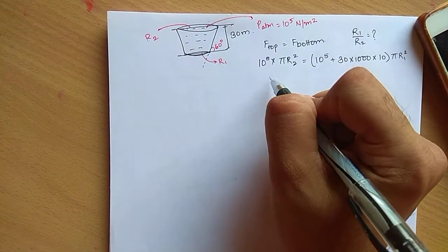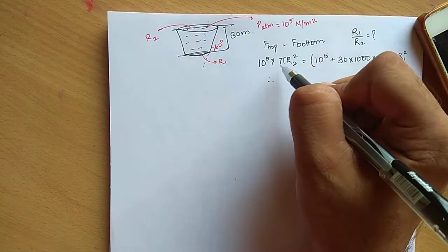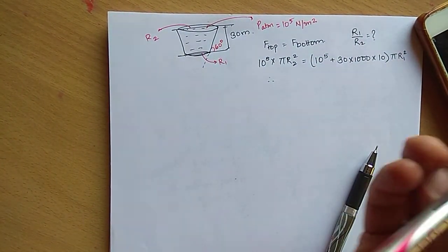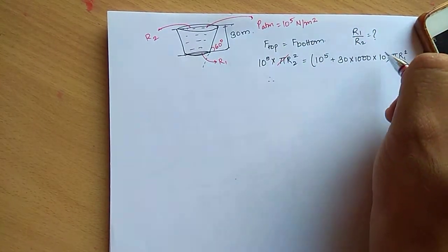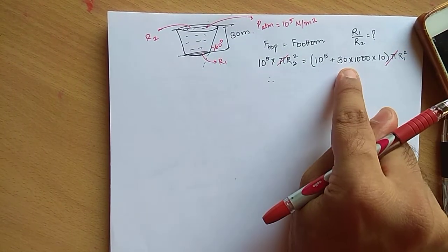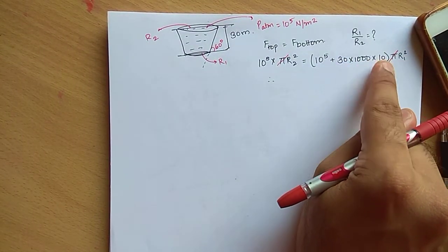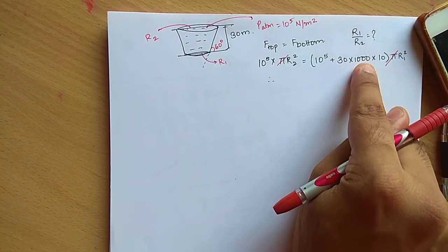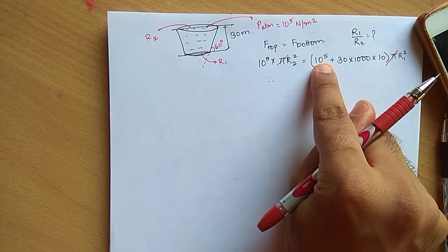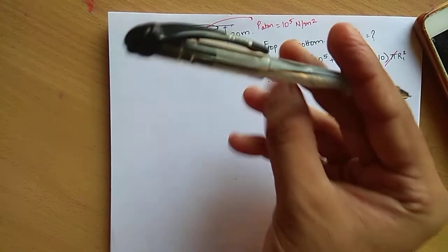Now if you have to solve it, pi cancels. 10 raised to 5, 1, 2, 3, 4, 5 - so this is 3 into 10 raised to 5 plus 10 raised to 5, which is 4 into 10 raised to 5.